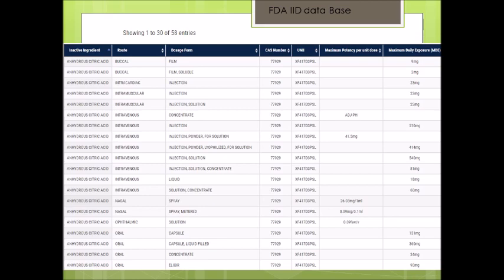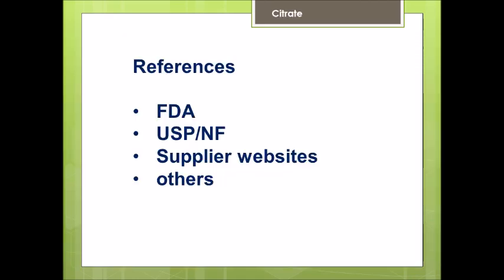Similarly, the anhydrous form of citric acid is very popular. There are at least 58 different entries. The references are FDA IID database, USP/NF monograph, and supplier websites.